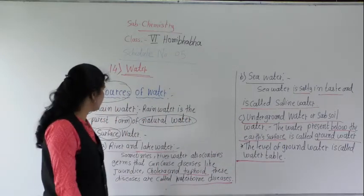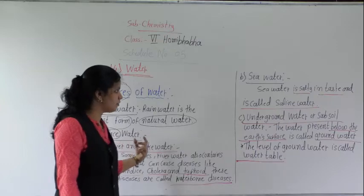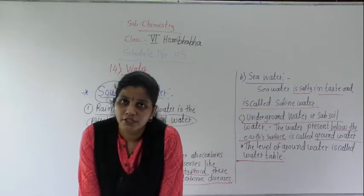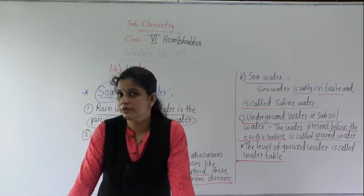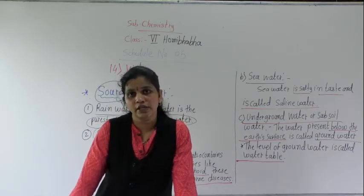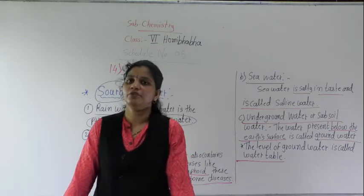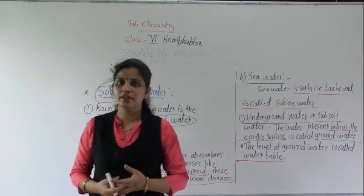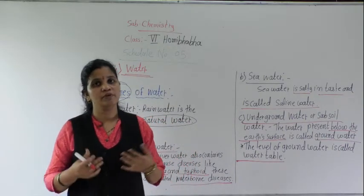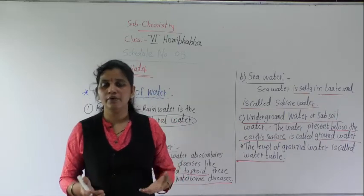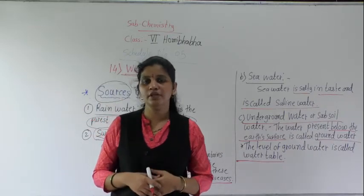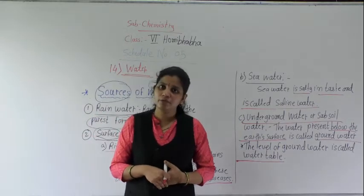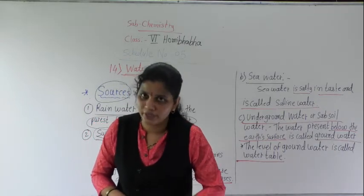So here today we discussed rainwater, surface water, and underground water — these three sources we discussed today. Just read related to these points, it is given in your textbook, and draw this diagram in your notebook. If you will face any difficulty while reading, if any point you did not understand, then just ask me or send me a message and we will discuss it in the next lecture. Remaining points we will continue in the next lecture. Thank you.